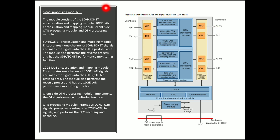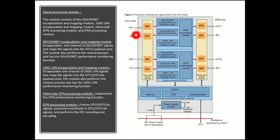Next is the signal processing module. There are different segments in the signal processing module: SDH/SONET encapsulation, client side OTN processing, 10G LAN, SDH/SONET encapsulation and mapping module, and the OTN processing module. For each port, there is a different OTN processing module, and there are different types of signals such as SDH/SONET channel, client OTN, or 10G LAN.